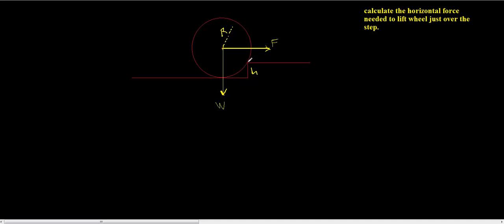We need to find a point of rotation. In this case, the only point of rotation we need is the corner of the step right there. If I draw a perpendicular line from this force to that point — just a dotted line like this — and the same thing for the horizontal force, we need a dotted line perpendicular to that force. We need to calculate the distance from the point of rotation to force F, and the distance from that same point to the weight.